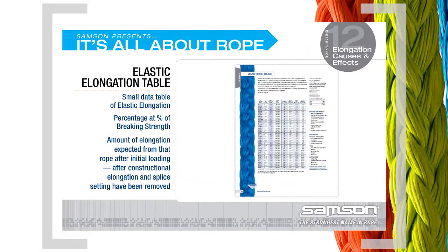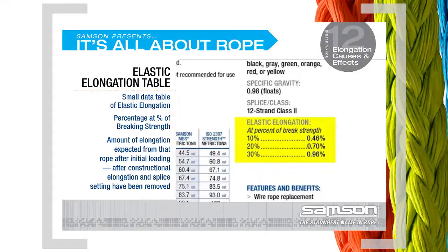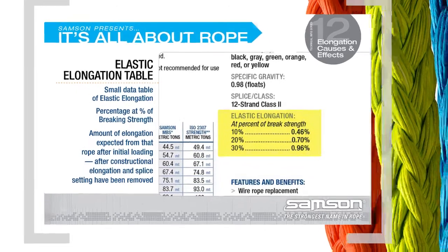In reviewing the specifications before selecting a rope, you may notice a small table of data labeled 'elastic elongation percentage.' These numbers, determined through extensive testing, represent the amount of elongation you can expect from that rope after it's been bedded in — after constructional elongation and splice setting have been removed.